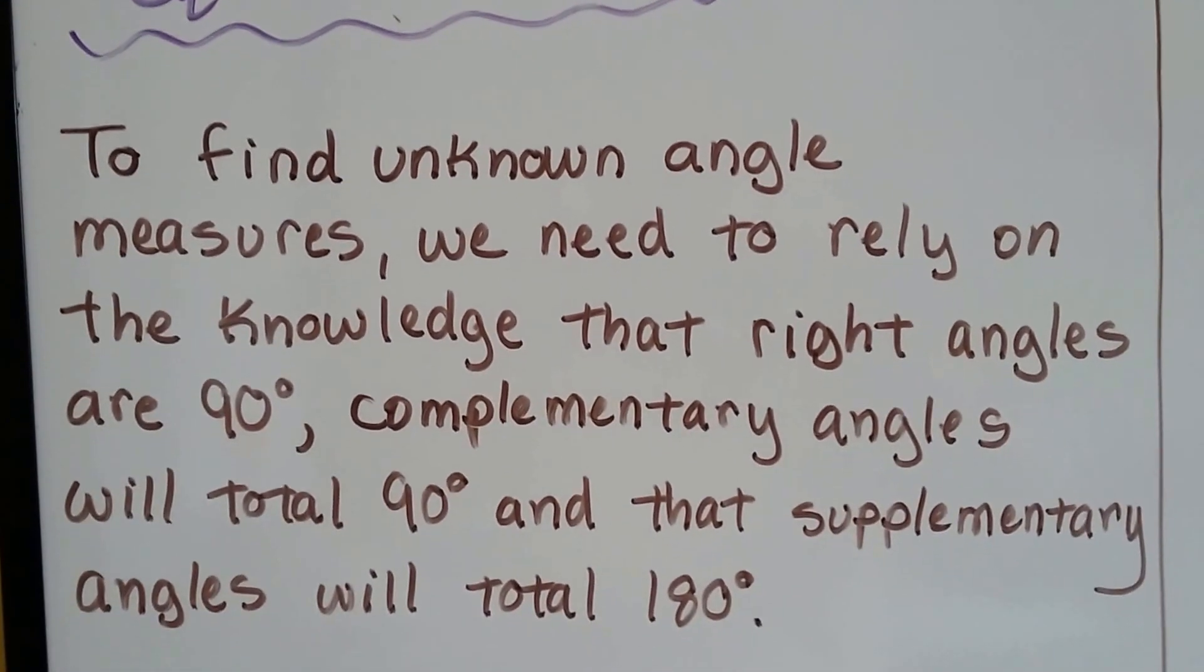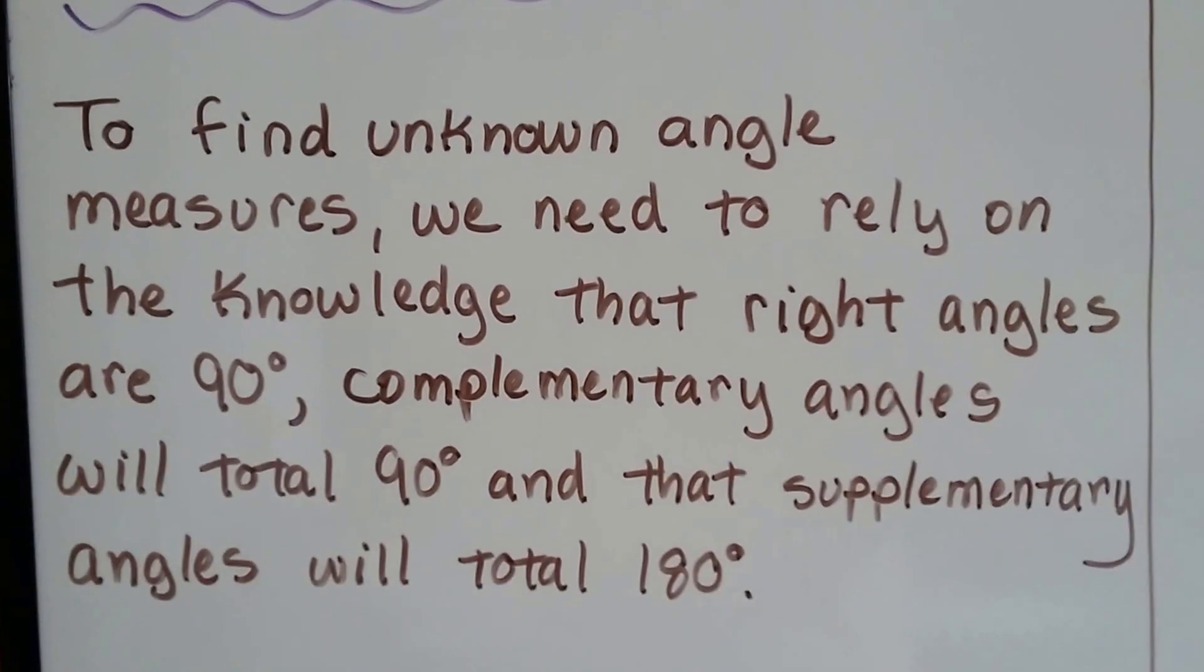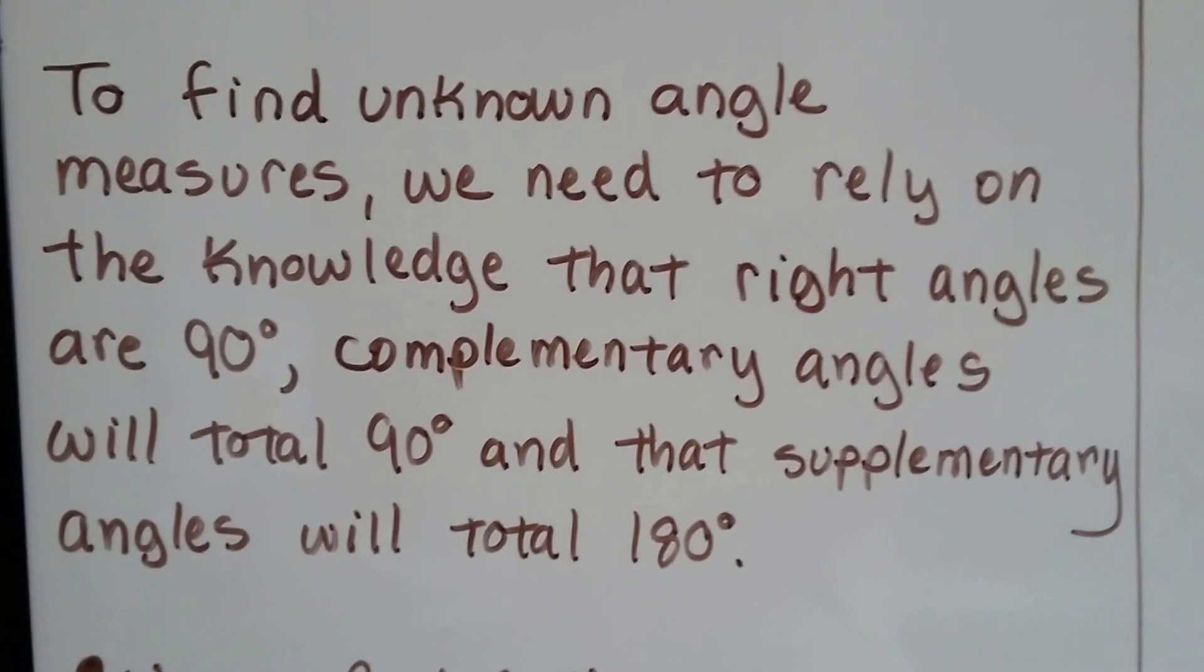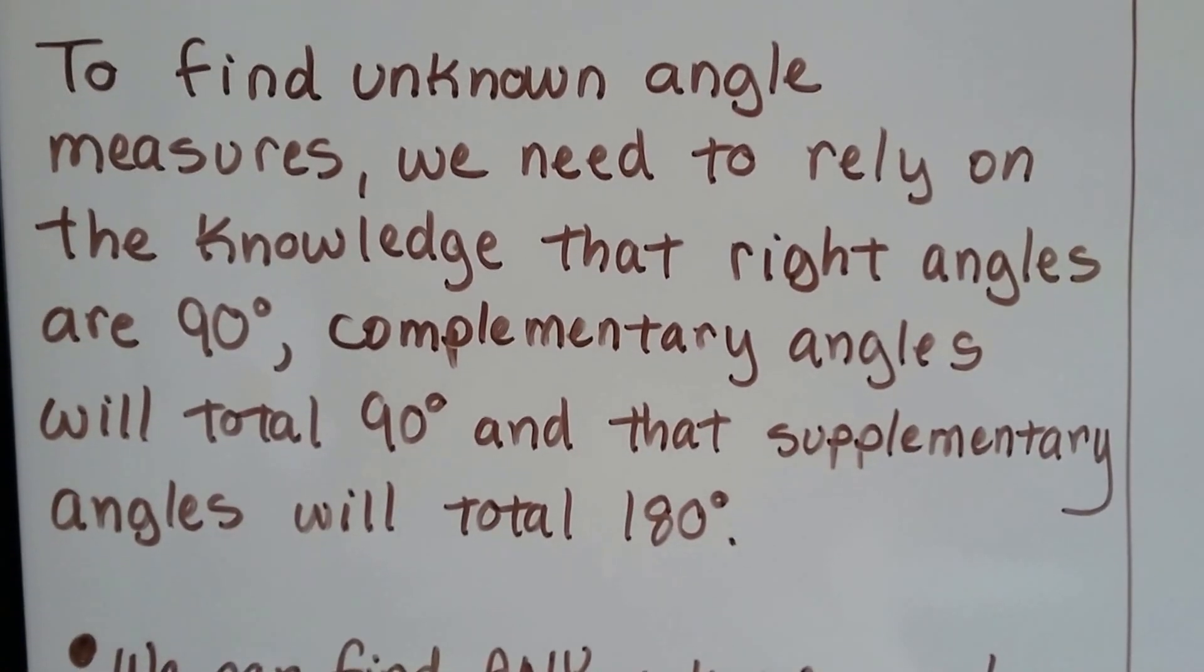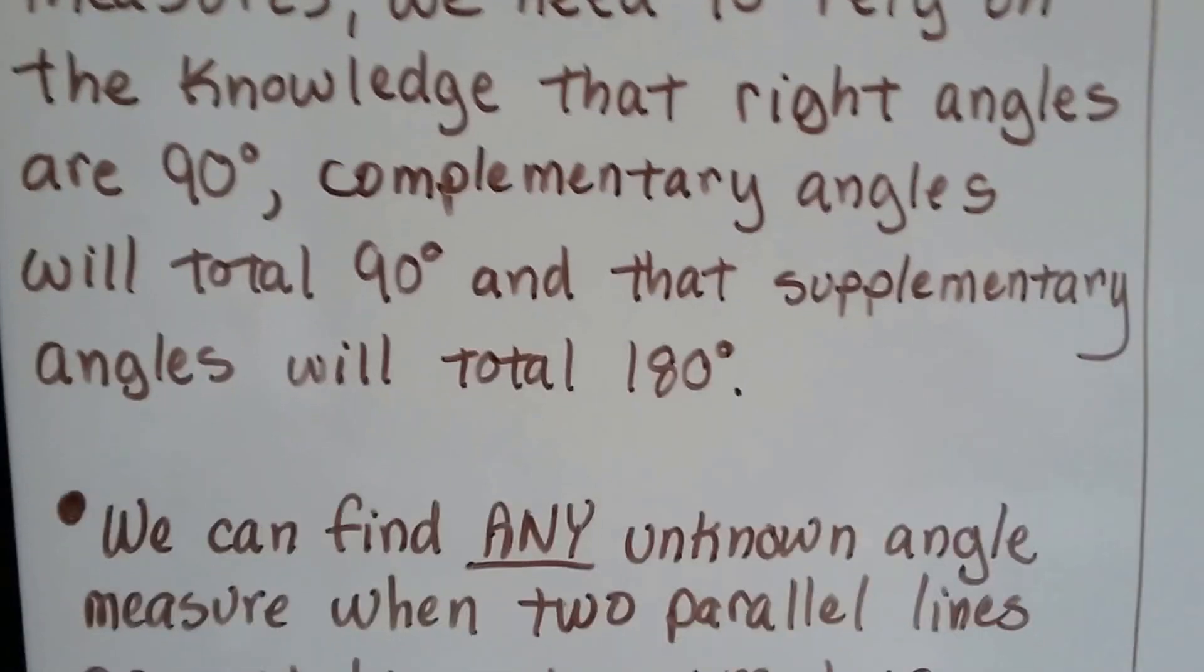To find unknown angle measures, we need to rely on the knowledge that right angles are 90 degrees, complementary angles will total 90 degrees, and supplementary angles will total 180 degrees.